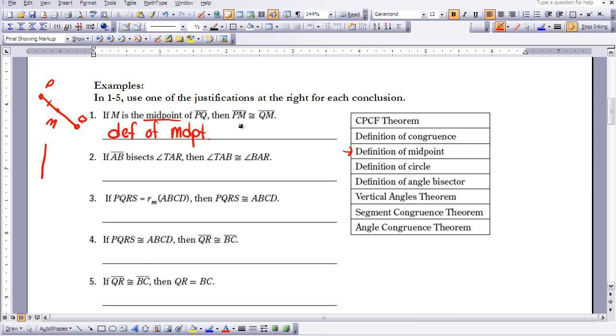The next question states that if I have a segment that bisects angle TAR, then angle TAB would be congruent to angle BAR. If you look at this word bisects, we know we are bisecting an angle. Let's look through our list to see if there's anything that would help us make that statement. This matches the definition of an angle bisector. Be very careful when justifying your conclusions, because sometimes students will just write definition of a bisector. You need to be specific. Is it an angle bisector, segment bisector, or perpendicular bisector? Be very clear.